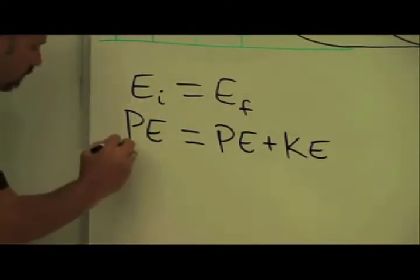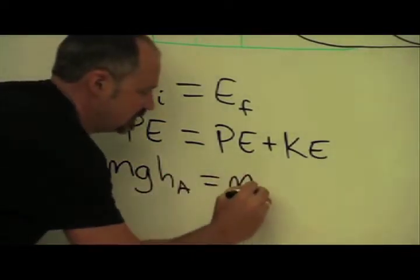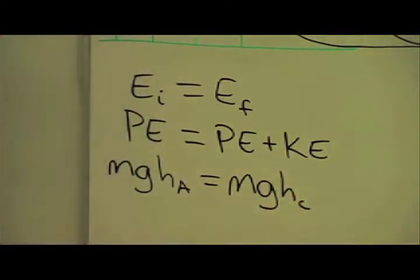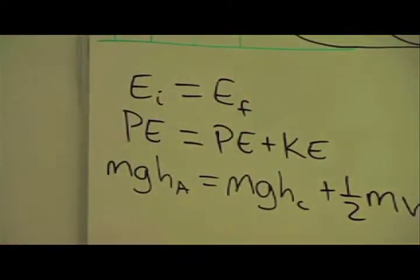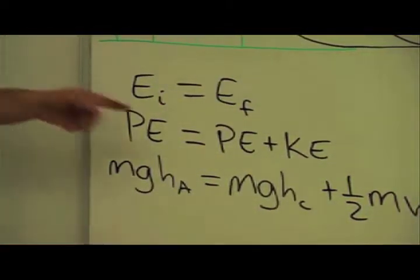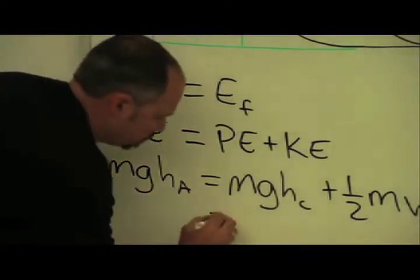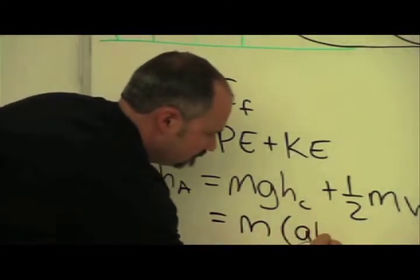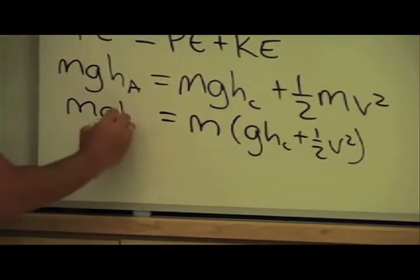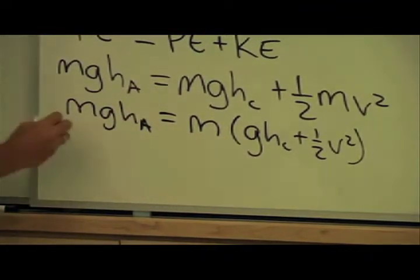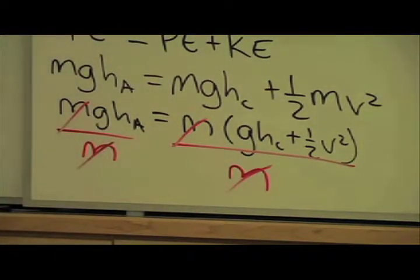Now let's plug in our terms. It's mass times acceleration of gravity times the height at point A. That equals mass times acceleration of gravity times the height at point C, plus the kinetic energy at point C. We can now cancel off the M's from both sides by factoring out the M and dividing both sides by M. The M's cancel, and I simplify the equation a bit.